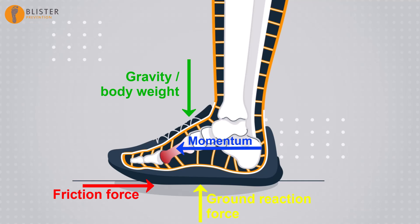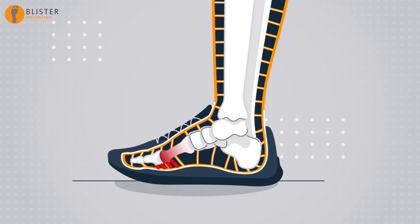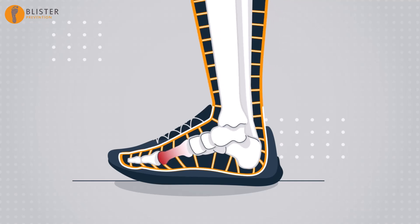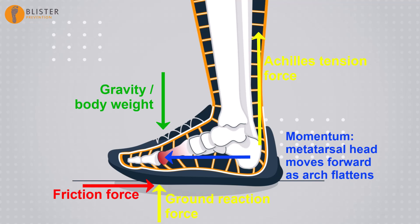At foot flat, pressure is exerted to the metatarsal heads as it reduces under the calcaneus. The primary force acting on the foot comes from gravity, and forward momentum continues. Shear deformation reduces at the heel and increases under the forefoot. During mid-stance, as the tibia moves forward over the foot, tensile force builds in the Achilles tendon, pressure increases under the forefoot, and the arch flattens a little. Essentially, the metatarsal heads push down and move forward. Friction force is increasing under the ball of the foot, holding the skin surface and sock stationary within the shoe as the metatarsal heads move forward relative to the skin.